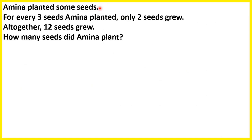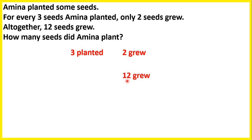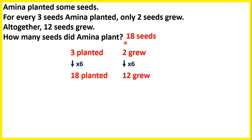Amina planted some seeds. For every 3 seeds Amina planted, only 2 seeds grew. Altogether 12 seeds grew. How many seeds did Amina plant? We know that for every 3 planted, 2 grew, and we know that 12 grew. So we need to think: 2 times what is 12? Well 2 times 6 is 12, and if we multiply 3 by 6, that tells us that 18 seeds were planted.